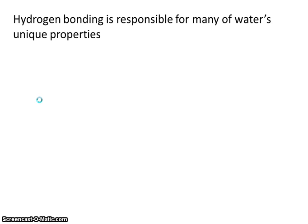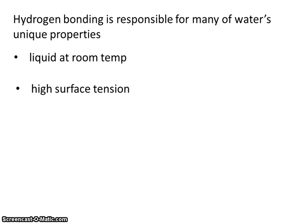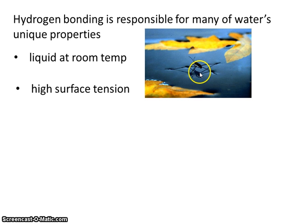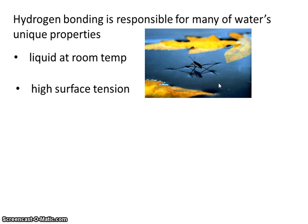Hydrogen bonding is responsible for many of water's unique properties — like the fact that water is a liquid at room temperature, and the fact that water has a high surface tension. Surface tension enables insects to literally walk on top of the water. It's almost like a skin that forms on the surface, because the water molecules are attracted so strongly to one another — almost like a bunch of magnets all pulling tight together.